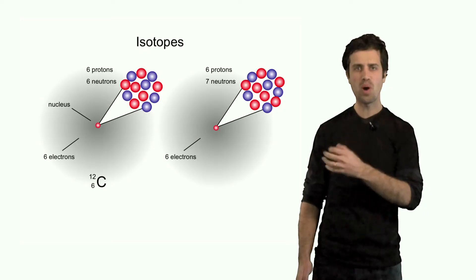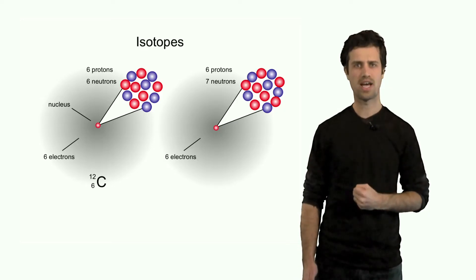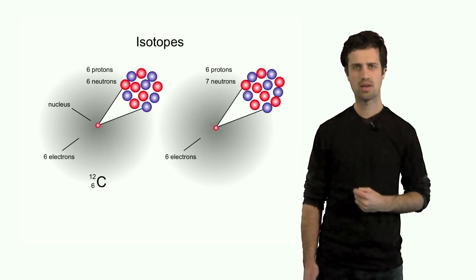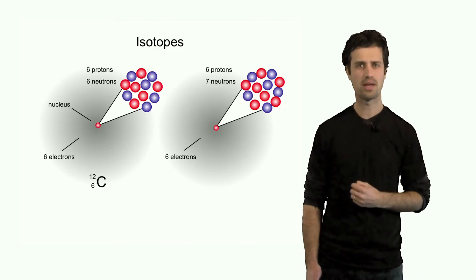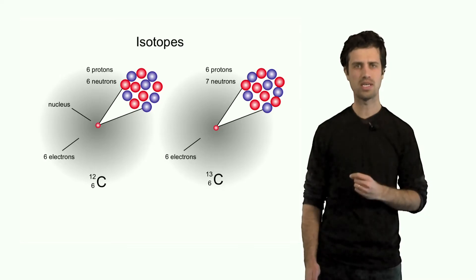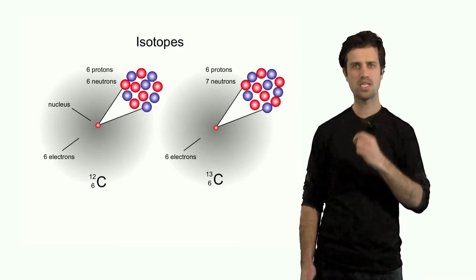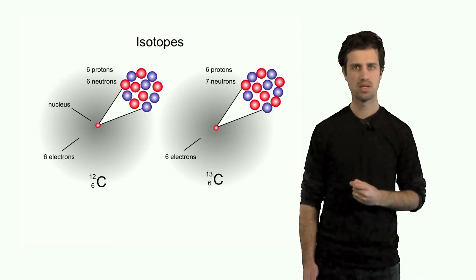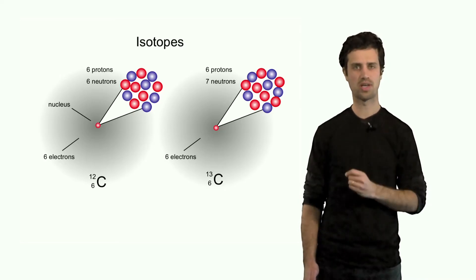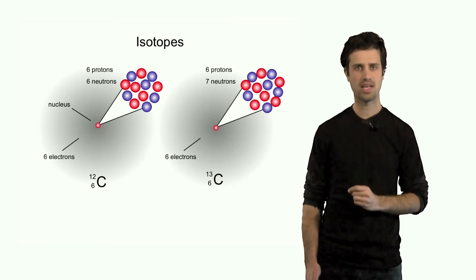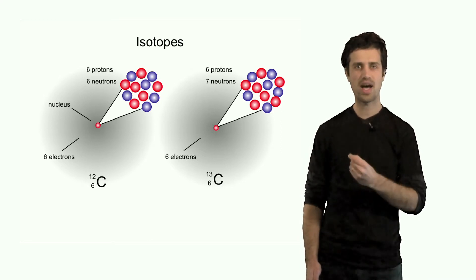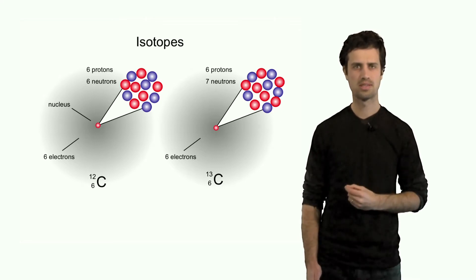Now both are carbon atoms. The second carbon atom is indicated as capital C with a superscript thirteen — which means the sum of protons and neutrons — and subscript six again is the number of protons, which defines the element.